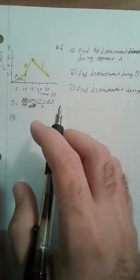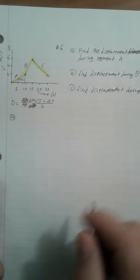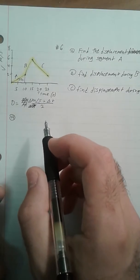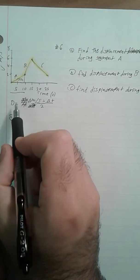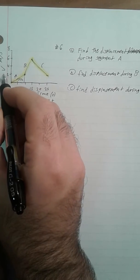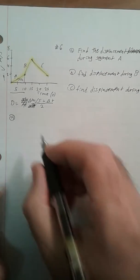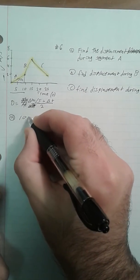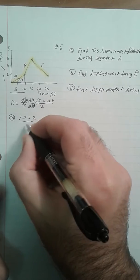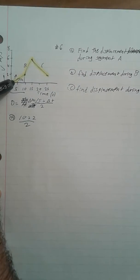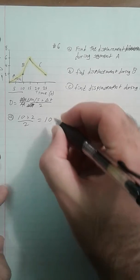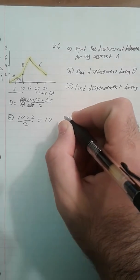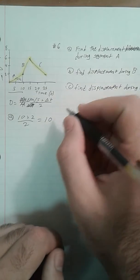For A, in order to get the displacement, I have to multiply these 10 seconds by this 2 meters per second, and divide it by 2 because it's a triangle right there. And that gets me 10 meters.